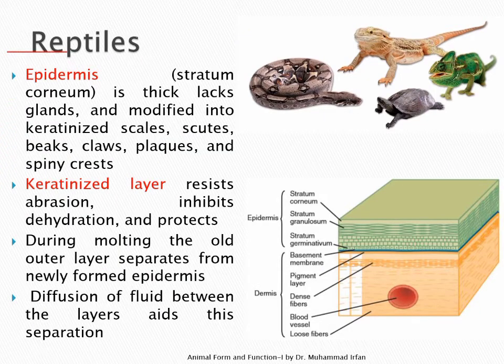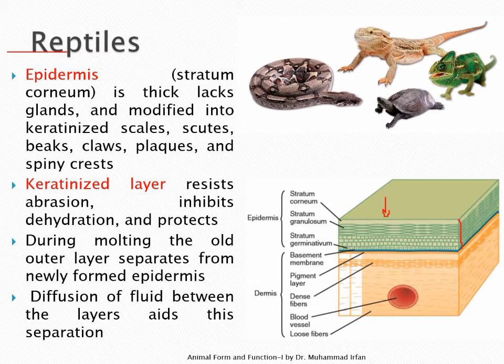In reptiles, the multiple-layered thick epidermis is cornified. Cornification is the programmed cell death of keratinocytes — the cells that contain keratin. It is a slow process forming dead cells that create a physical barrier for the skin. This outer layer is called the stratum corneum, meaning the surface that is cornified, and it is the outermost layer of the epidermis in reptiles.